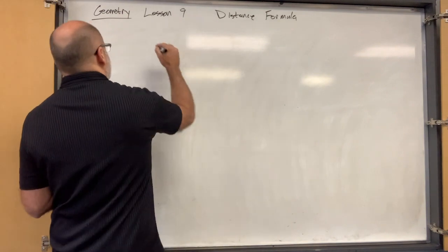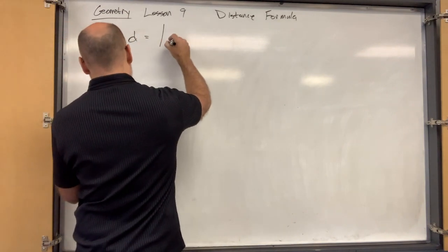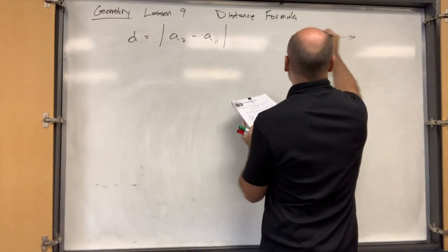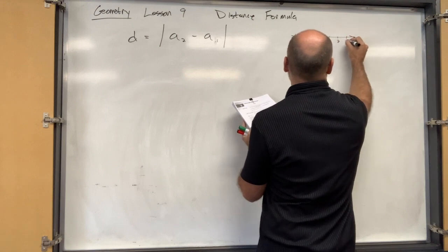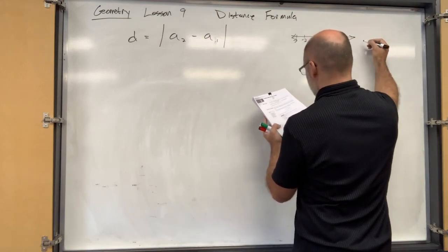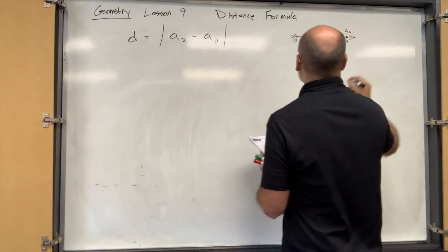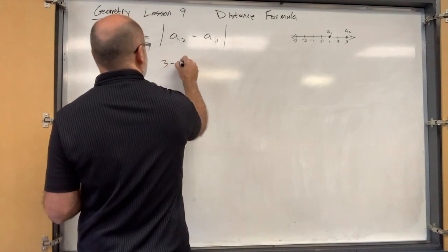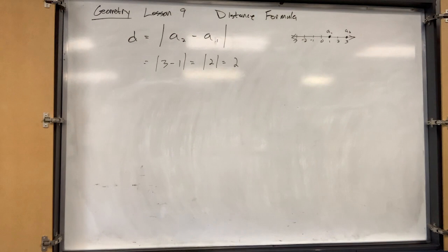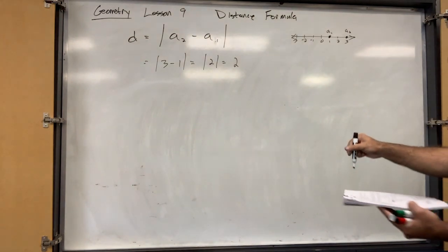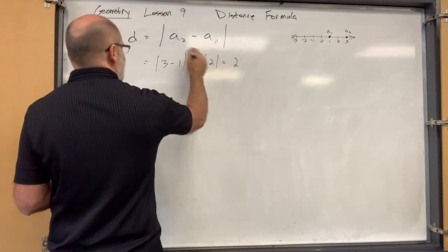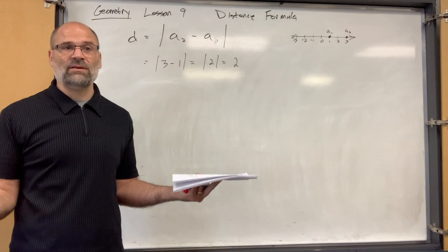We did talk about the distance formula being: distance equals the absolute value of x₁ minus x₂, or x₂ minus x₁. For example, on a number line if you have two points — say at 1 and 3 — the distance is just the absolute value of 3 minus 1, which is the absolute value of 2, so it's 2 units apart. You could just count: don't count the first one because you haven't gone a distance yet, then one, two.